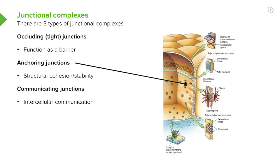These zonular adherents are actually attached to the actin filaments of the cytoskeleton and they link the cytoskeleton from one cell to its neighboring cell.